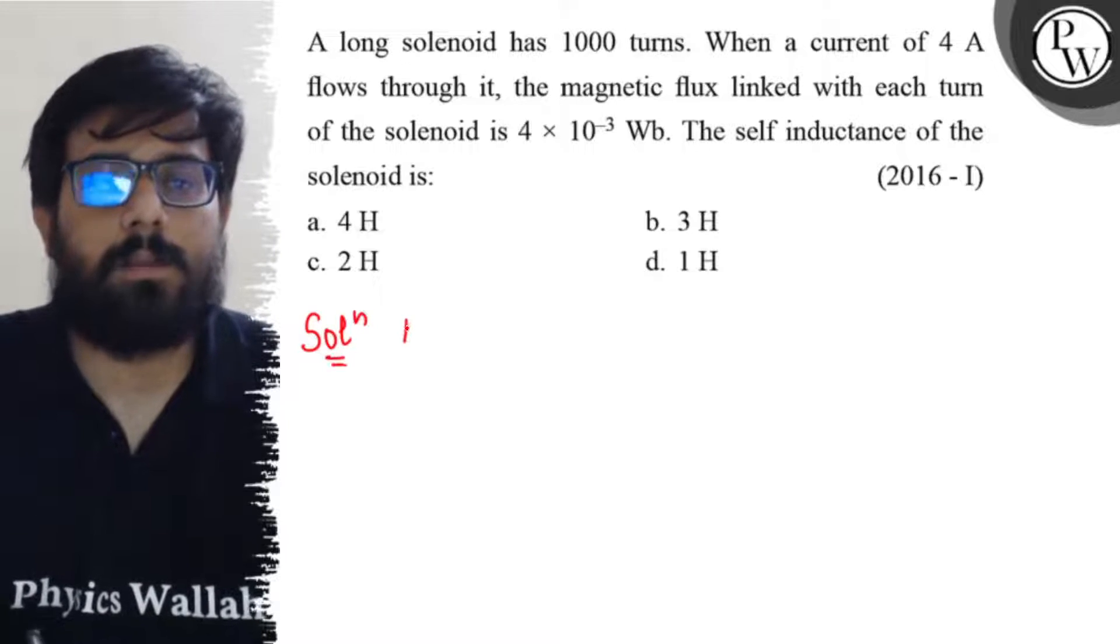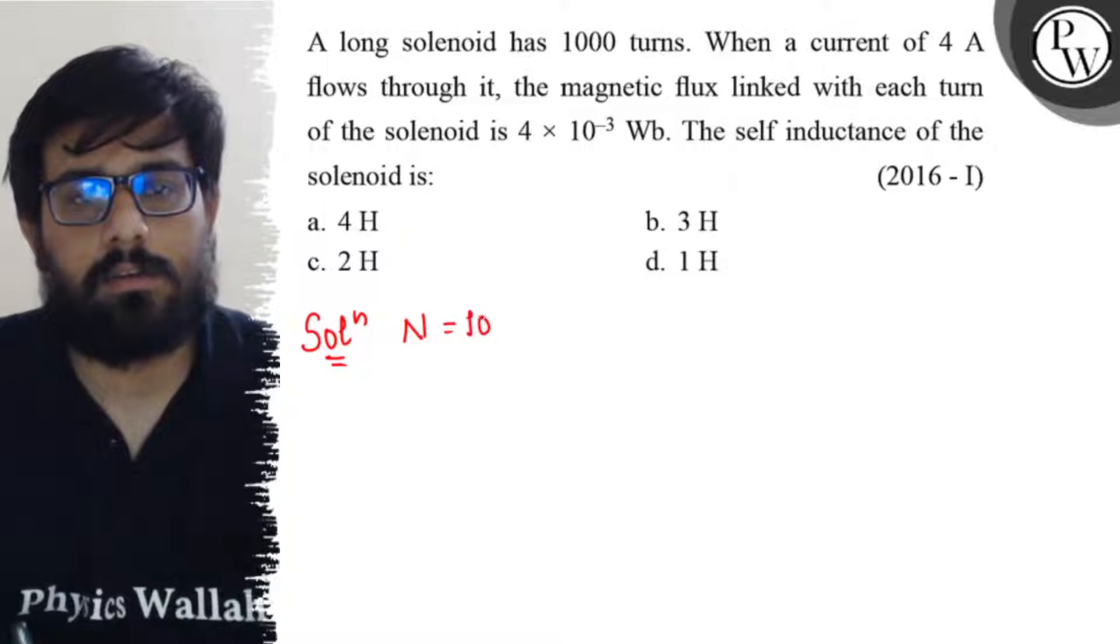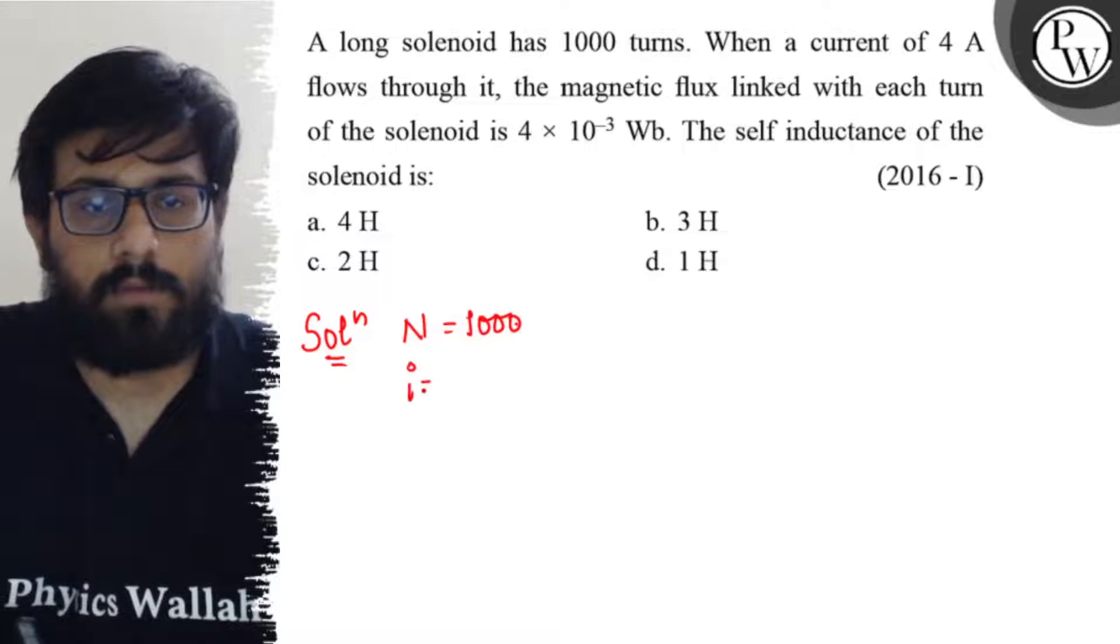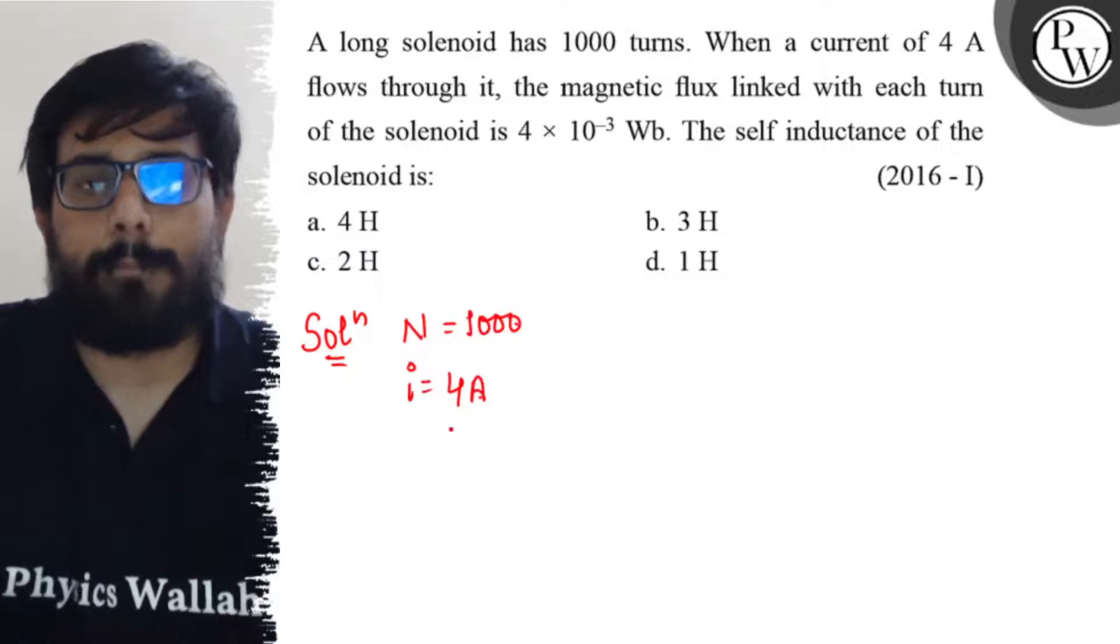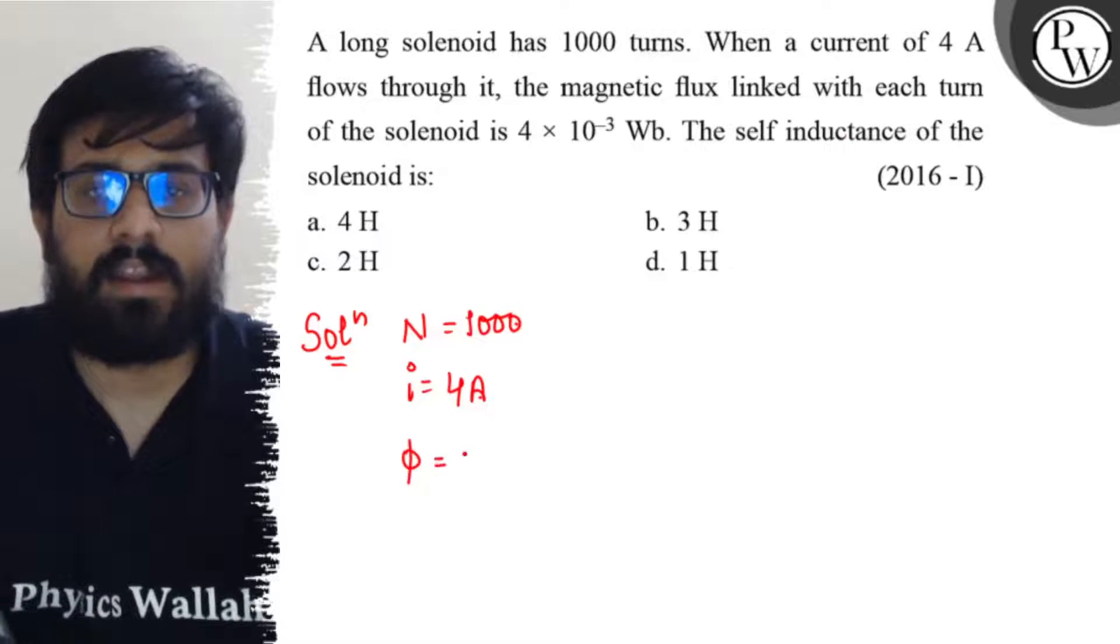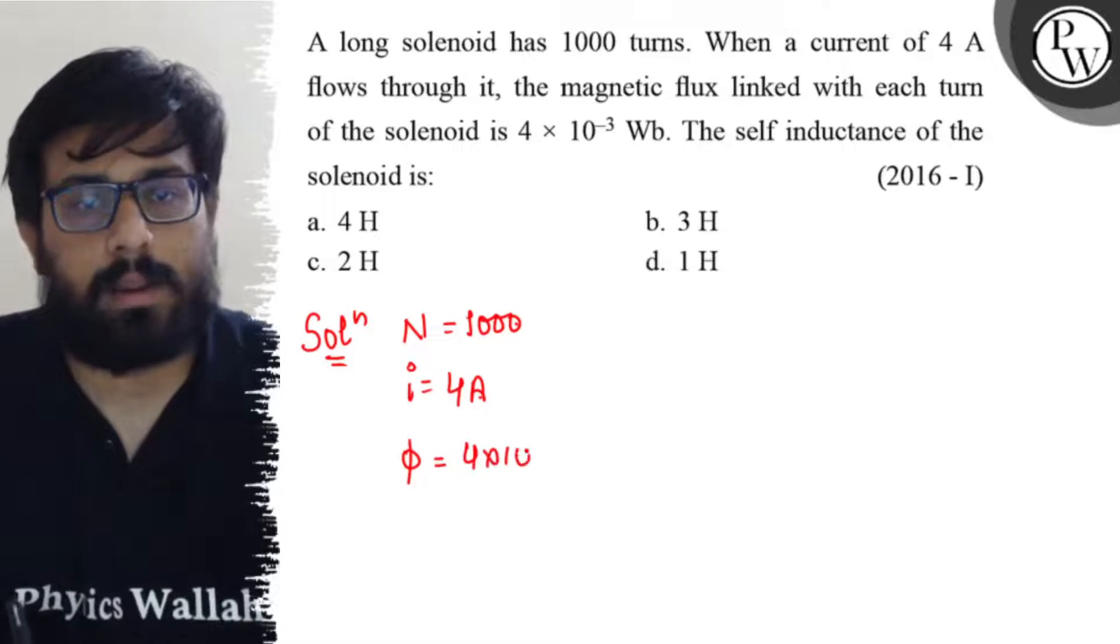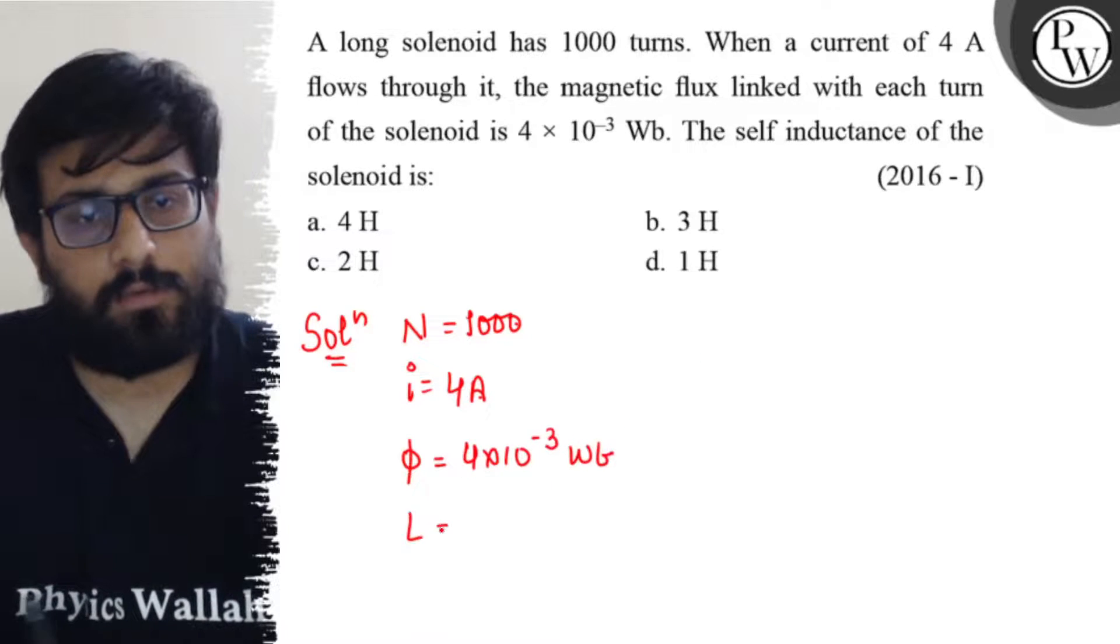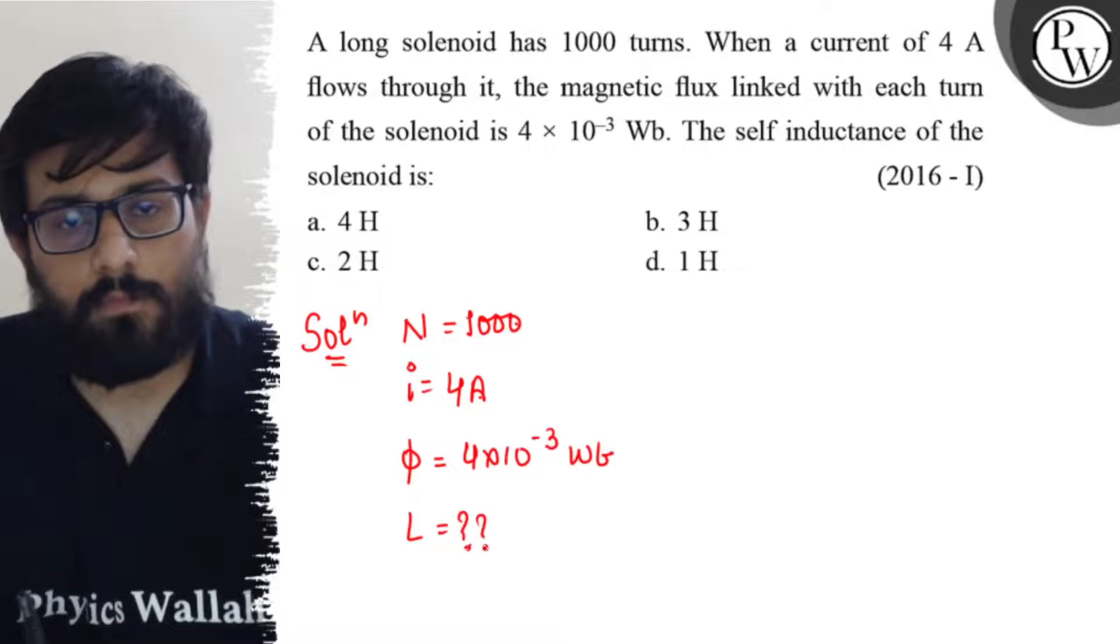In this question, the number of turns is 1000, and we have the value of magnetic flux as 4 × 10^-3 weber. I will find out the self-inductance. We have to calculate the value of L.